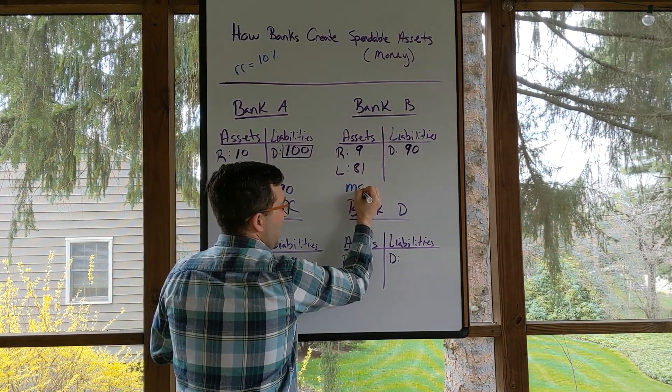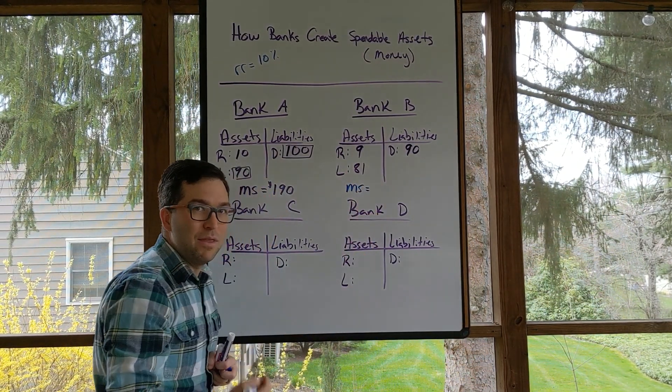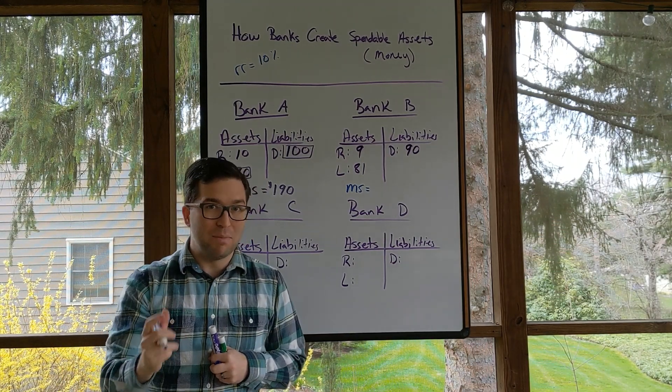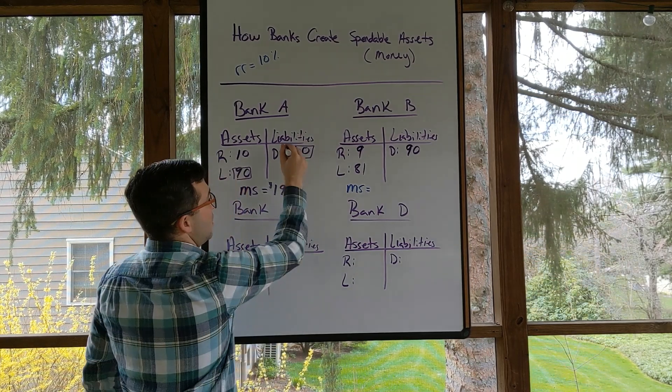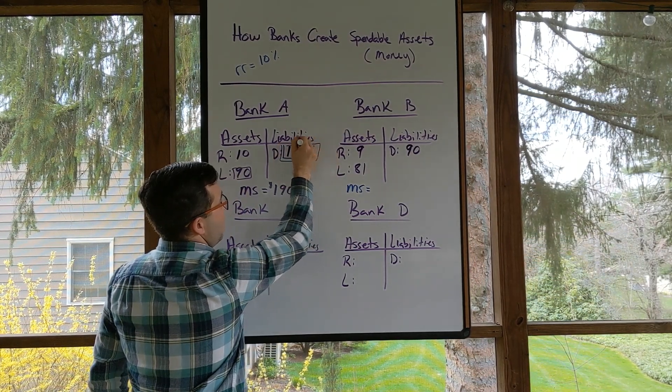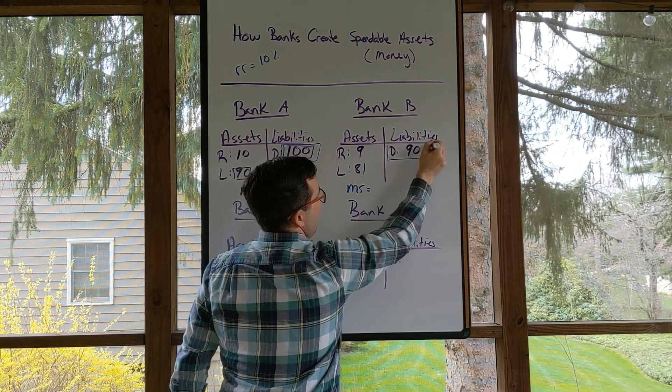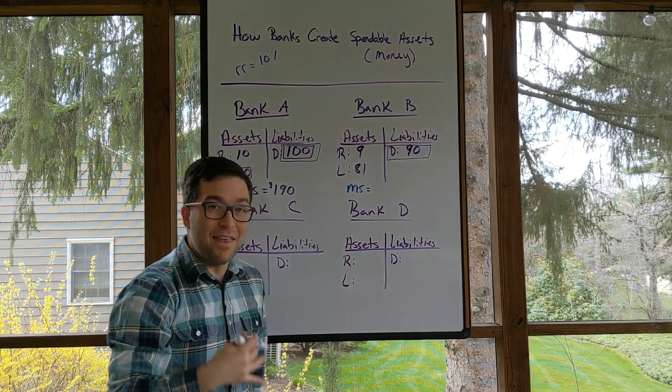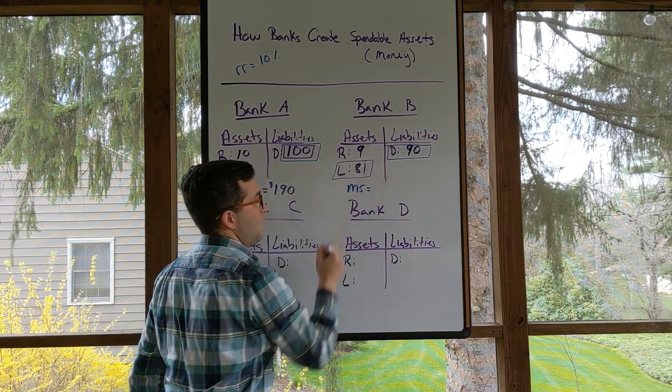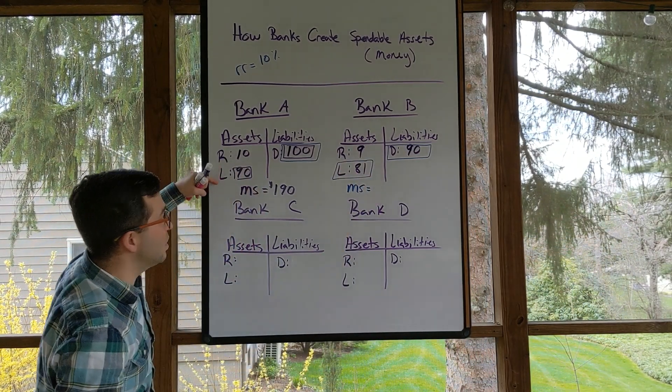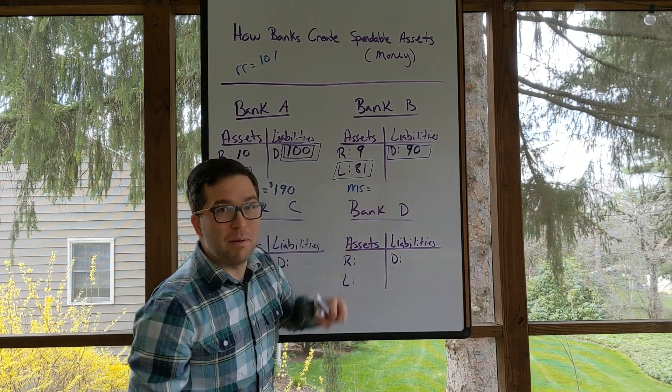What's the money supply after this step? Well, remember, the money supply, the spendable deposits, have to be all the deposits that are there. So we know it's got to be this deposit and this deposit and then anything that's been recently created that could be spent, which would be this loan. Notice it's not this loan because this loan has become the deposit.